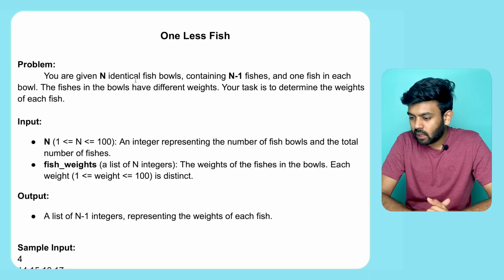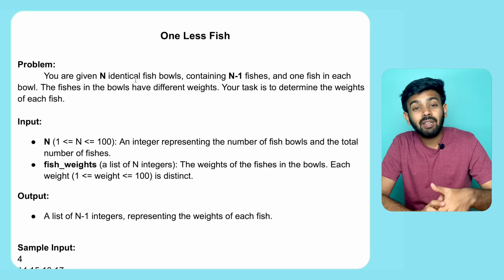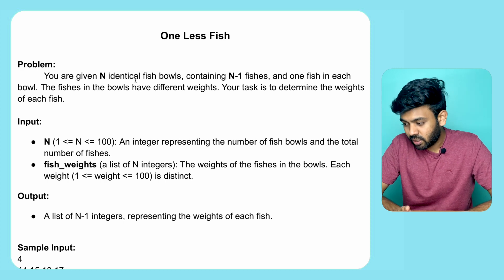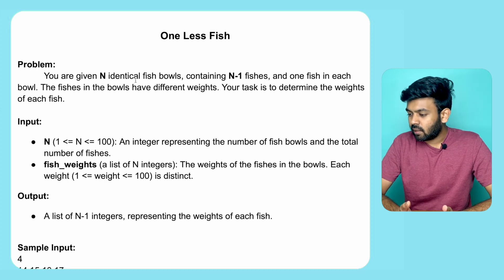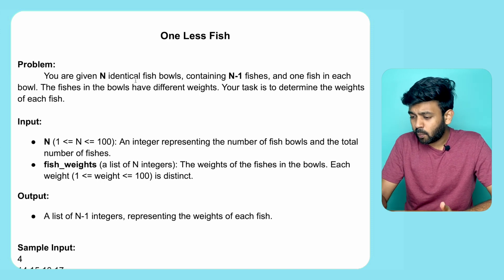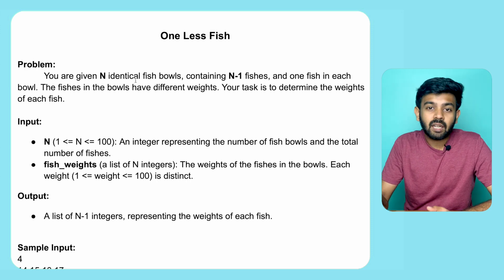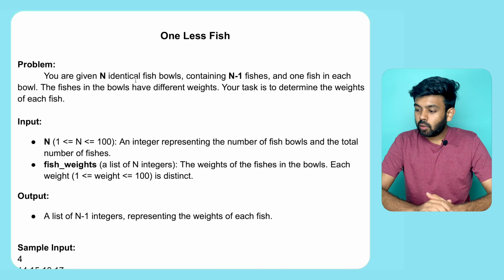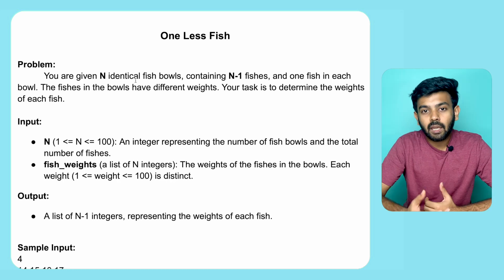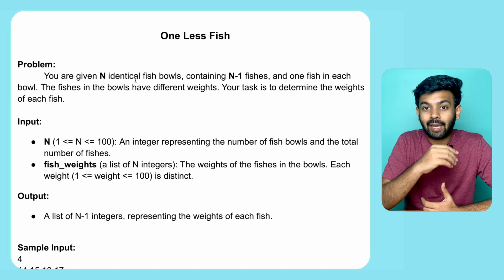So what is the first question? One Less Fish. What is the problem statement? You are given N identical fish bowls. There are N-1 fish — one fish in each bowl. The fish in these bowls have different weights. Your task is to determine the weight of each fish. So we have N bowls and there are N-1 fish.